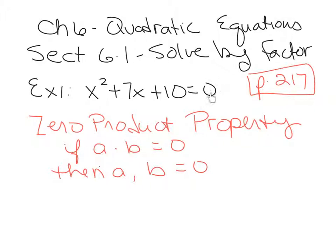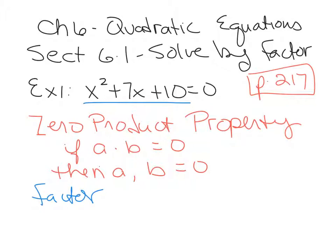If you have a term on one side and your equation does not equal 0, just subtract it off, combine like terms, and make it equal 0. We're going to factor this. If you need review of factoring, go back to those factoring videos. So this would factor as x plus 5, x plus 2, and we still have our equals 0.